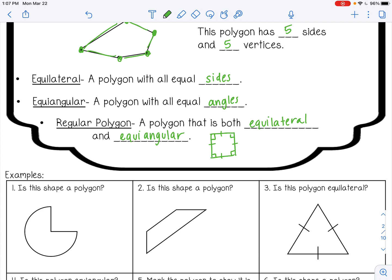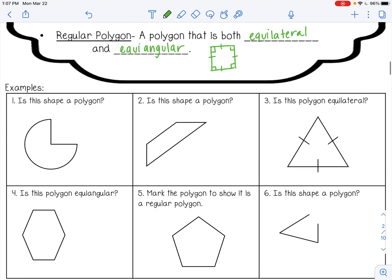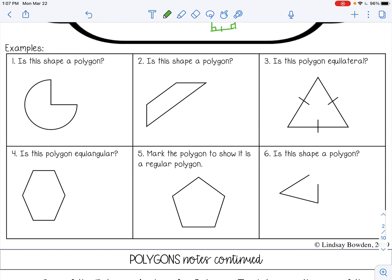Alright, so let's try some examples. So number one, is the shape a polygon? That would be no because it has a curved side. You only want straight sides. Number two, is this shape a polygon? Yes. It has straight sides and they are all closed, meaning there's no gaps. All the sides meet.